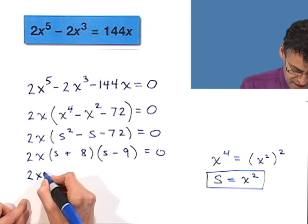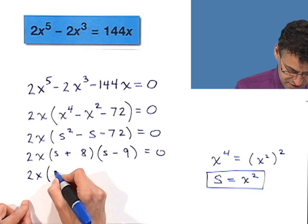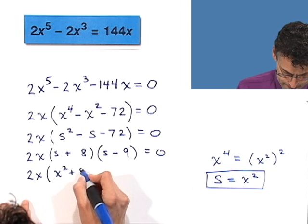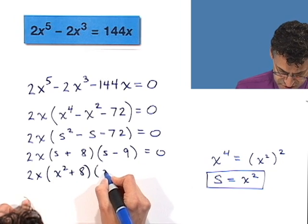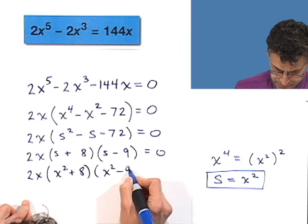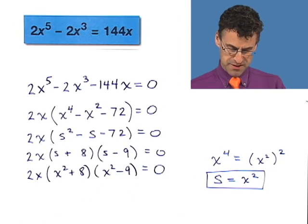But now put it back in. So I have 2x, and remember, the s is just x squared. And then the s is just x squared. And now I have to solve this.